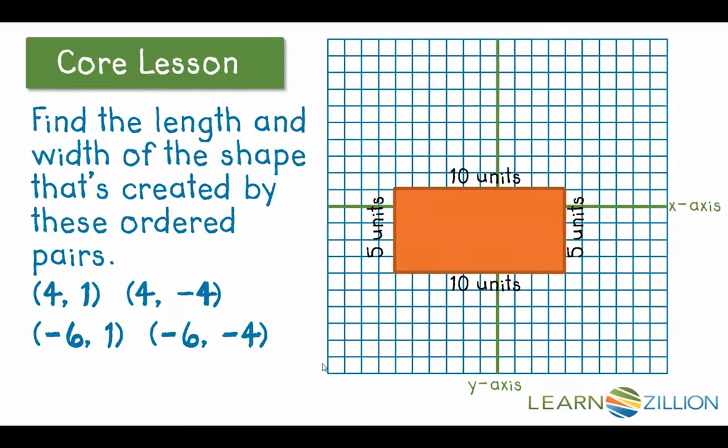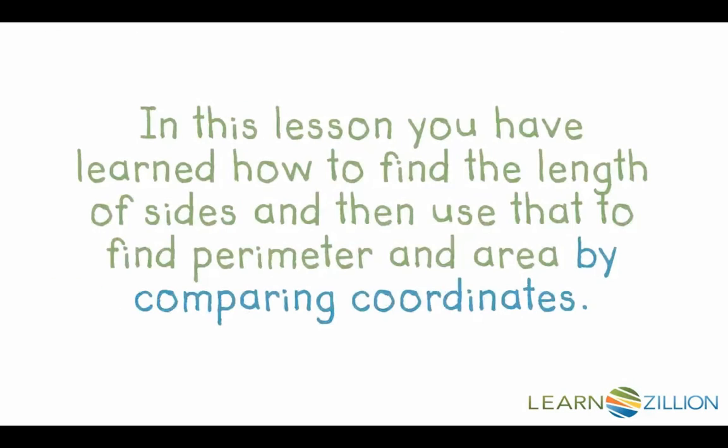And you can use those measurements to find both your perimeter and your area. For our perimeter, we would just add all of them up. So our perimeter would be 10 plus 10, which is 20, plus 5, which is 25, plus another 5, which is 30. So our perimeter is 30 units. And then for our area, we would just multiply our length times our width. So we could do 10 times 5, which would be 50 square units.